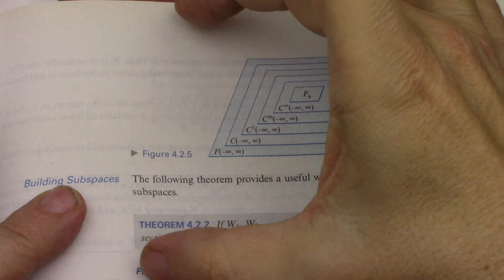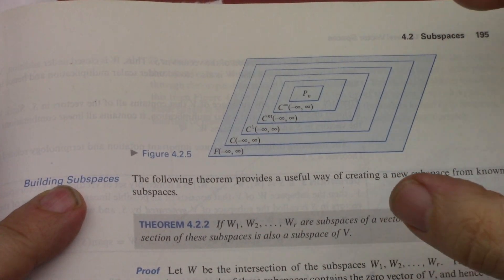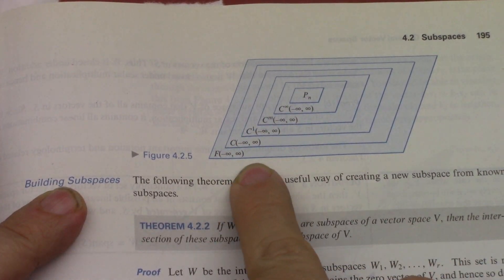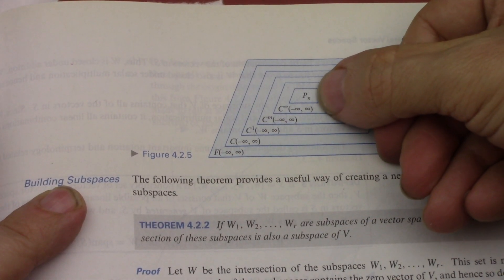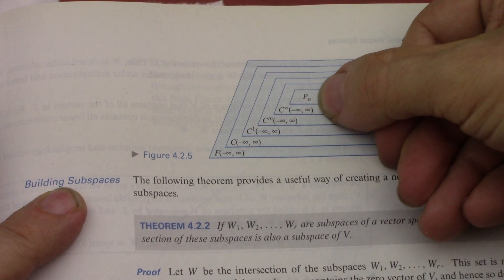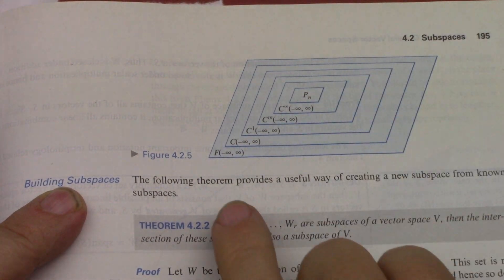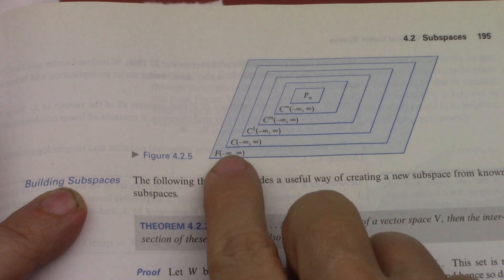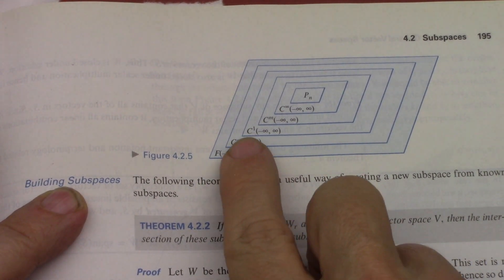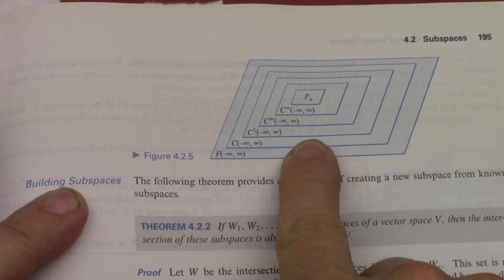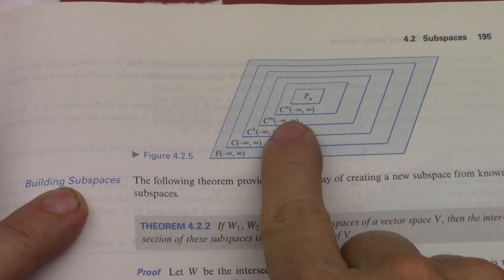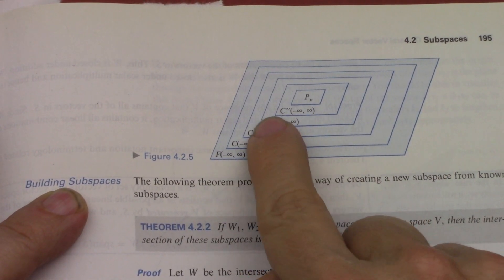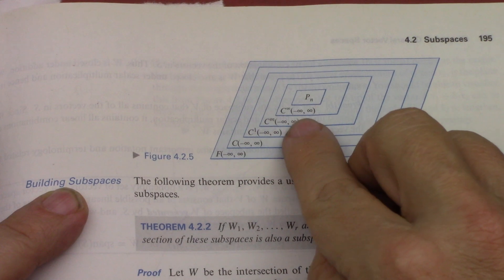But here we are. So this diagram is really useful in Anton because he lays out a bunch of infinite vector spaces and then the finite vector space of the n-dimensional polynomials right in the center, showing you how they're all nested. And so all the functions, then all the continuous functions, all the continuous functions with a first continuous derivative, then all the continuous functions with m continuous derivatives, then infinitely differentiable continuous functions - sine and cosine come to mind.